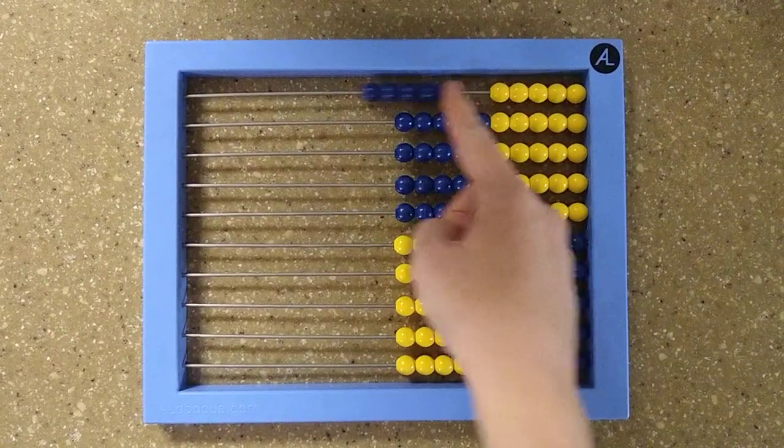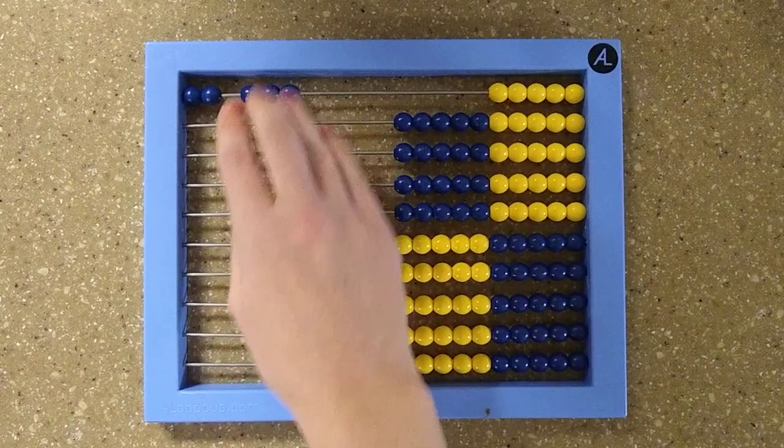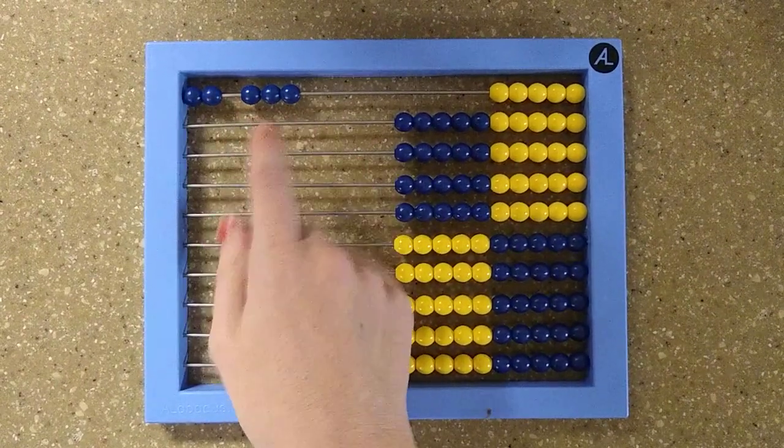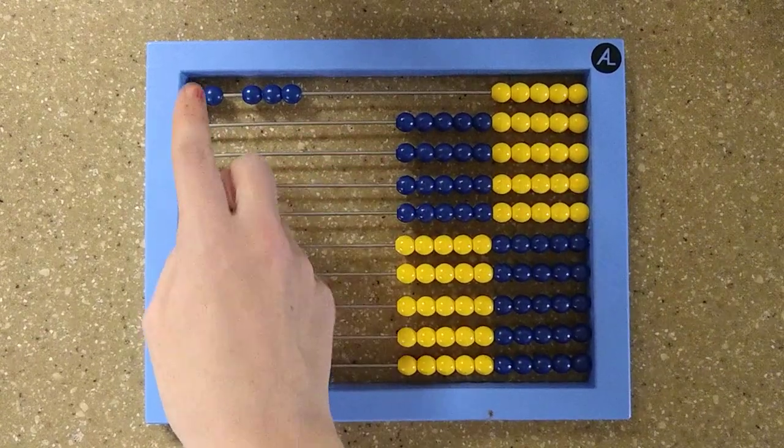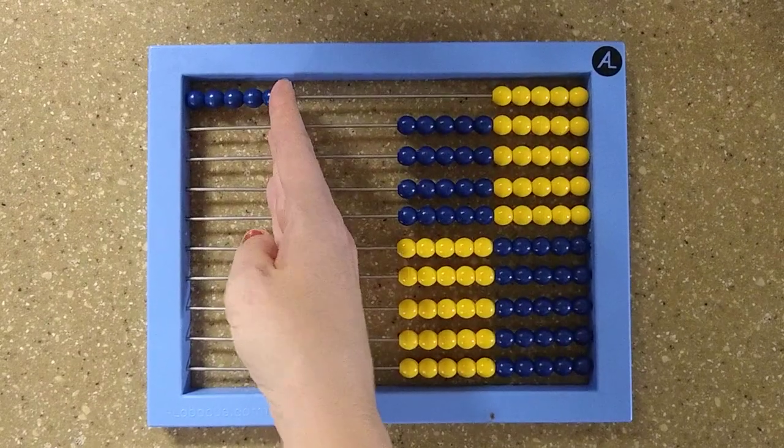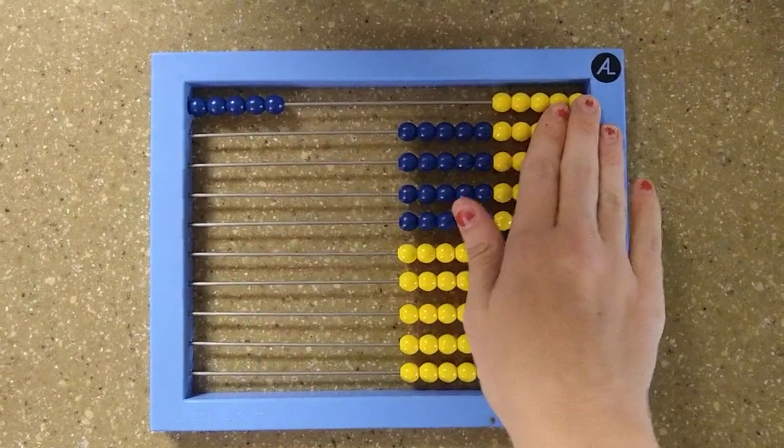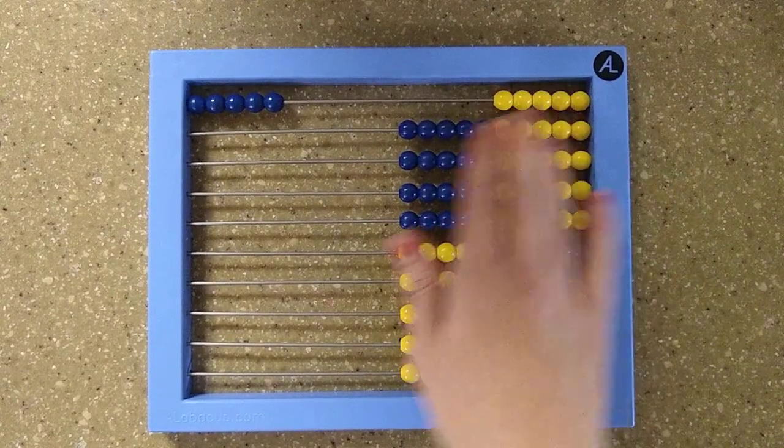And then when you do five, the way that you're going to subitize this is you're going to train them to see two and three and to memorize that as a math fact that two and three is five. And then they can also see that's all the blue beads, and to recognize all the blue beads always means five. All the yellow beads over here always means five.